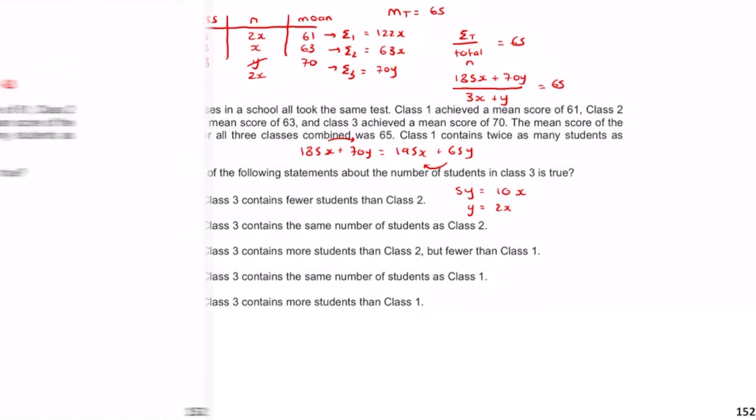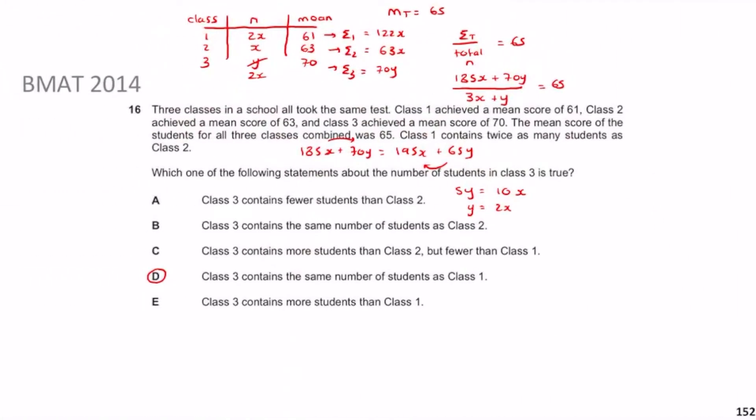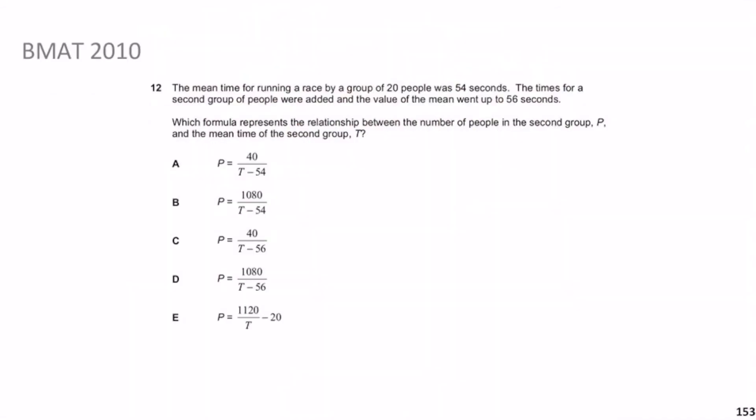Welcome back. Previously we looked at BMAT 2014 question 16 — same idea, means and working with variables. Now we move on to the last statistics question: BMAT 2010 question 12. The mean time for running a race by a group of 20 people is 54 seconds. Times for a second group are added and the new mean is 56. Which formula represents the relationship between p (the number of people in the second group) and t (the mean time of the second group)?